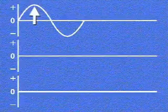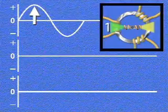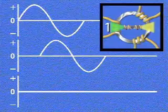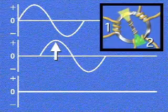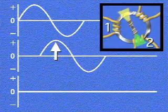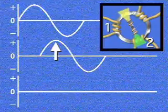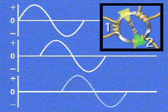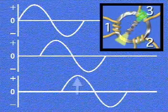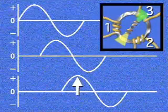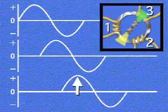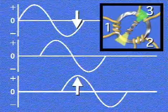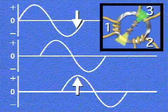Maximum positive voltage occurs as the field around the north pole of the electromagnet crosses the first stator winding. Maximum voltage in the second phase occurs as the field crosses the second winding. At this point, the first phase voltage is decreasing. In the third phase, maximum voltage occurs as the field around the north pole crosses the third stator winding. Now the south pole's magnetic field has crossed the first winding, inducing a negative voltage.